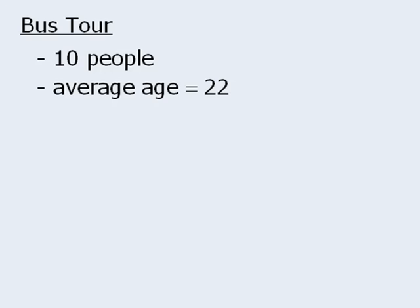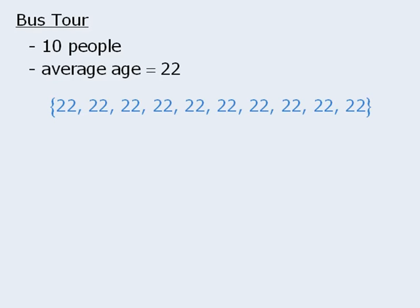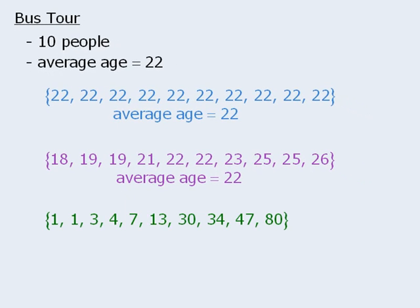Now since you happen to be 22 years old, this sounds like a great trip. The only problem is that there are many possible ways in which 10 people can have an average age of 22 years. For example, all 10 people could be 22 years old, in which case the average age is definitely 22. Or these could be the ages of the 10 people, in which case the average is also 22. We should also recognize that the ages could look something like this and still have an average of 22. So although the average is 22 for all three sets of numbers, the numbers themselves are quite different.